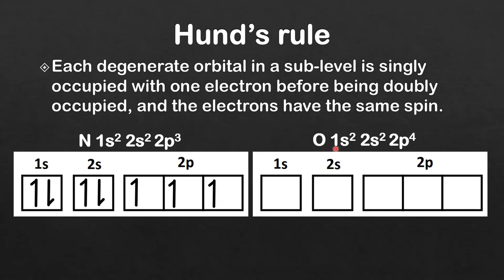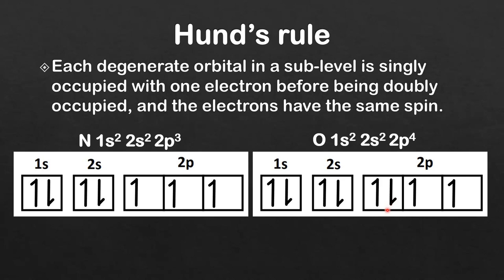Let's look at one more example — oxygen. The electronic configuration is 1s2, 2s2, 2p4. We start filling the lowest energy orbitals first: the 1s orbital, then the 2s orbital, and then the 2p sublevel with its 3 degenerate orbitals. We have 4 electrons to place. According to Hund's rule, we fill them singly first — one in each p orbital — and now that each p orbital is singly occupied, we place the remaining electron in the first orbital with an opposite spin.